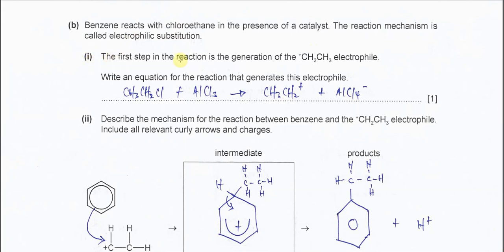Part one: The first step in the reaction is the generation of the CH3CH2+ cation, this ethyl carbocation, and this is an electrophile. Write an equation for the reactions that generate this electrophile. Very easy, so it must be the chloroethane. The chloroethane will break heterolytically and the chloride will combine with the catalyst to form AlCl4- and the carbocation will be generated.